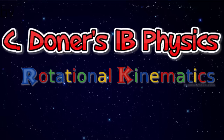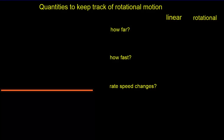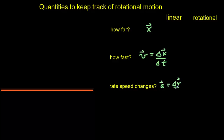Let's take a look at rotational kinematics. Earlier in the course we studied linear kinematics and there were three basic quantities that kept track of the motion of objects. One kept track of where the object is, how far it is away and in what direction — that was the displacement. A second quantity tracked how fast the object was moving, called the velocity, equal to the rate of change of displacement. And a third quantity kept track of how fast the speed was changing, called the acceleration, equal to the rate of change of velocity.